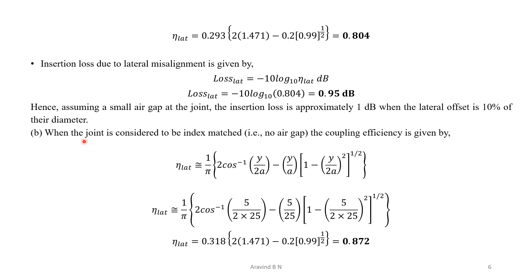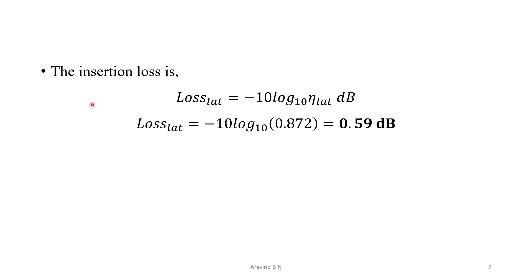For case B — when the joint is index matched (no air gap) — the coupling efficiency simplifies to: eta_lateral ≈ (1/π) × [2cos⁻¹(y/2a) − (y/a) × (1 − (y/2a)²)^(1/2)]. Substituting y and a, we get eta_lateral = 0.872. The insertion loss is: Loss = −10 log₁₀(0.872) = 0.59 dB.